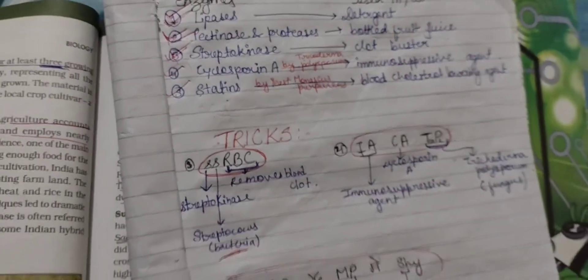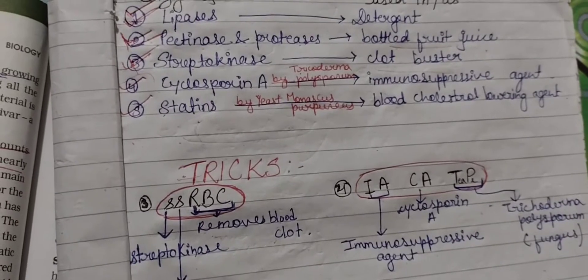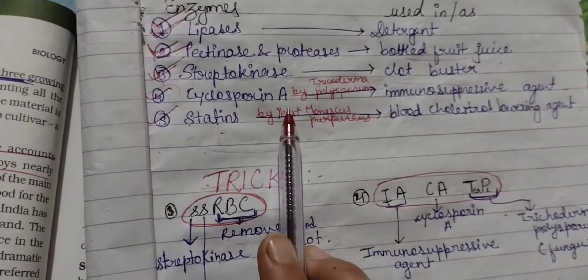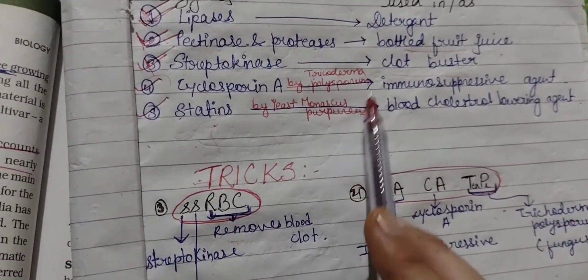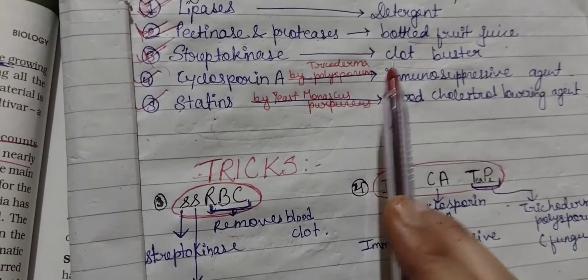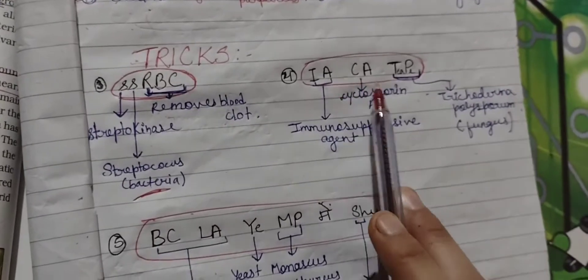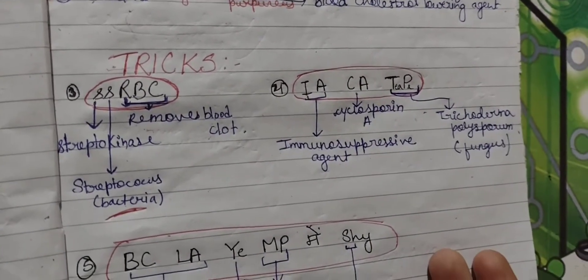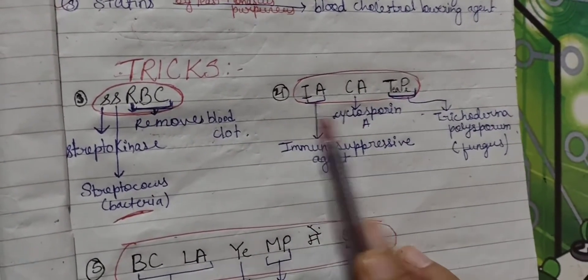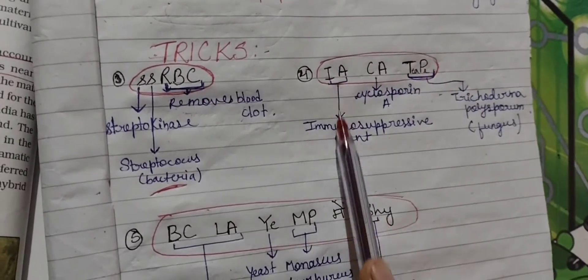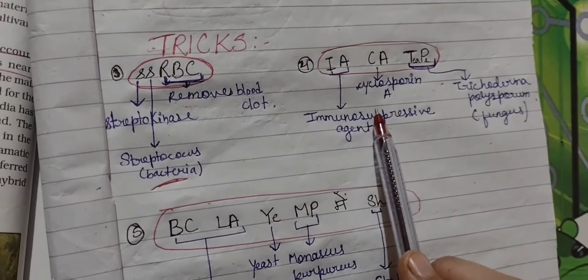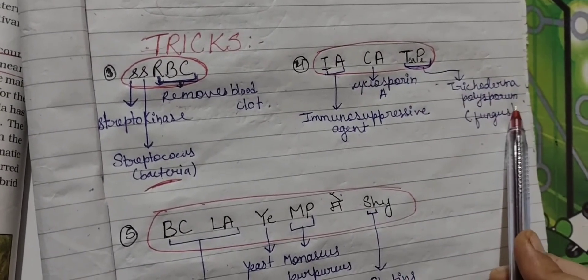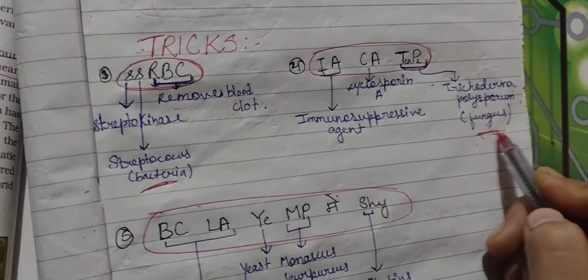When someone's body has an organ transplant, the immune system opposes and fights against it, so we need to take a drug called Cyclosporine A, which is produced by Trichoderma polysporum. The mnemonic is IACAT: IA stands for Immunosuppressive Agent, CA stands for Cyclosporine A, and TP stands for Trichoderma polysporum — which is a fungus. This is very important: you should know that it is a fungus.